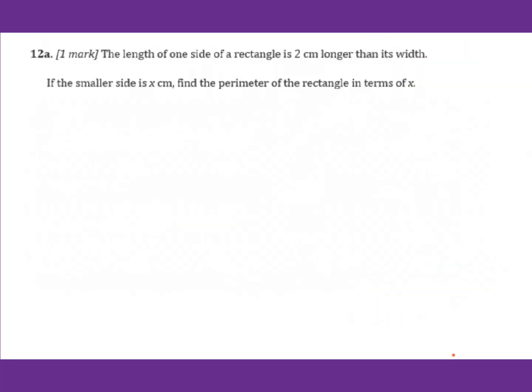Let's go to 12a. The length of one side of a rectangle is 2 cm longer than its width. If the smaller side is x, find the perimeter of the rectangle in terms of x. You will draw this rectangle. Smaller side, that's x. Then the longer side is 2 cm longer than its width. Therefore, you have x plus 2.